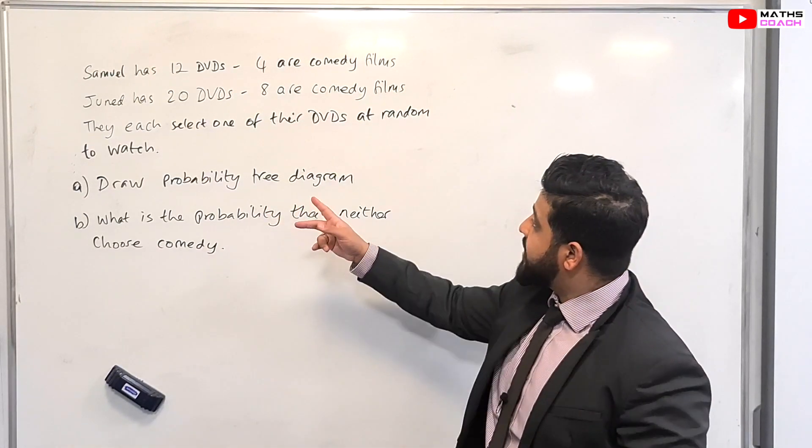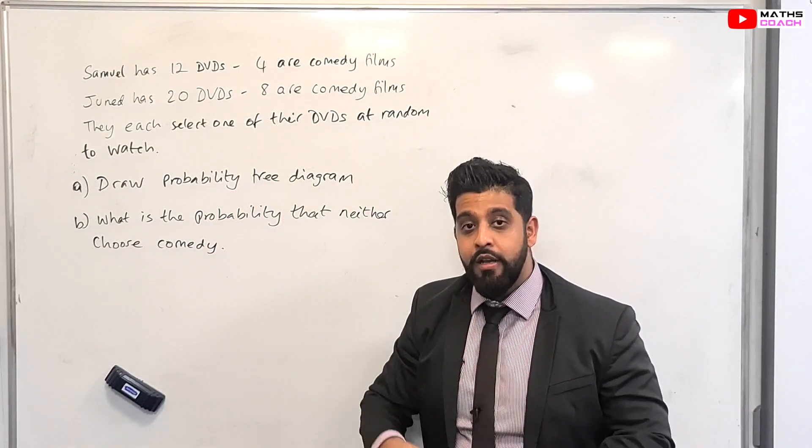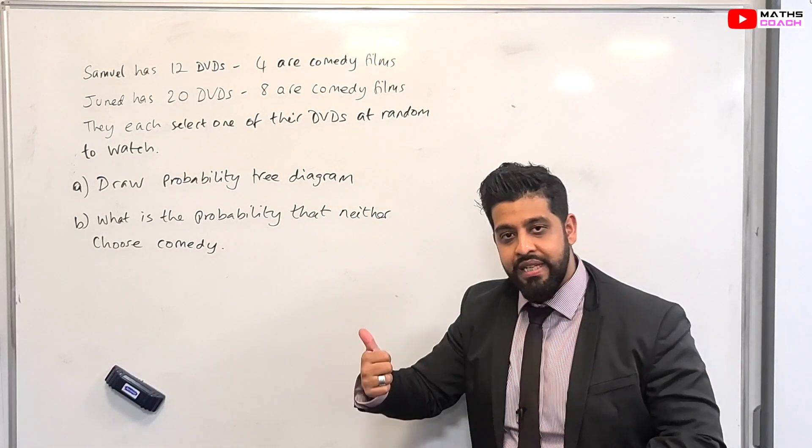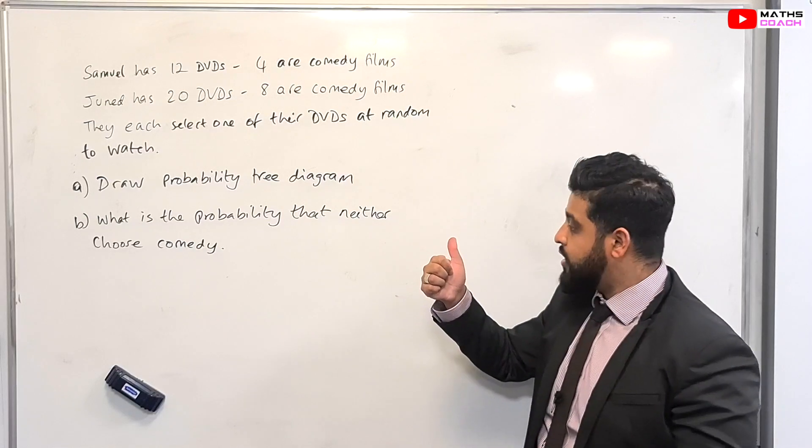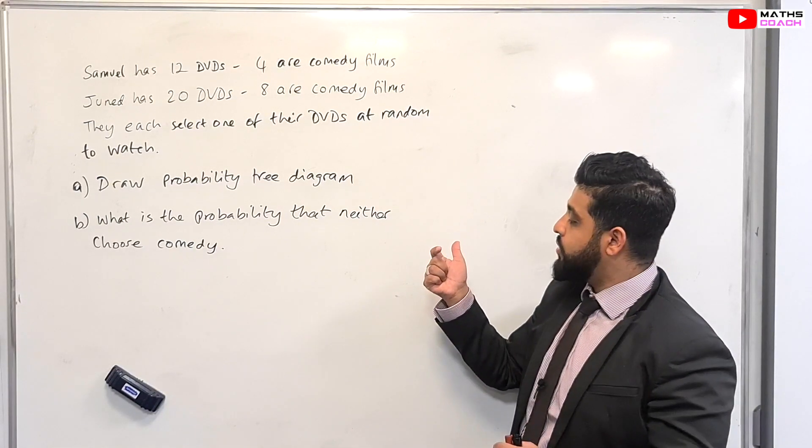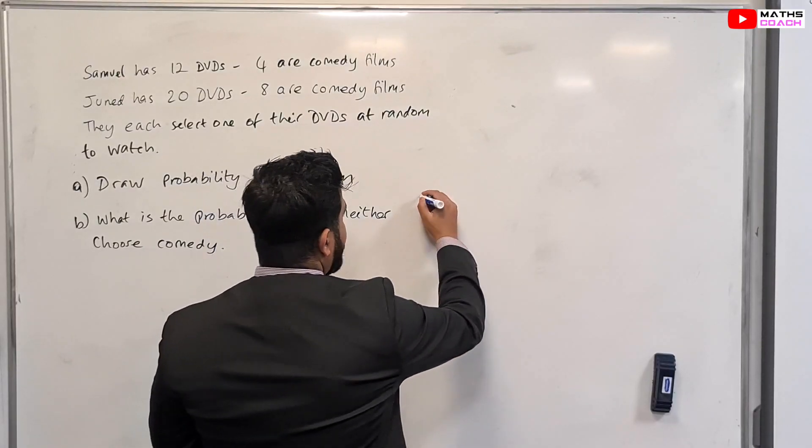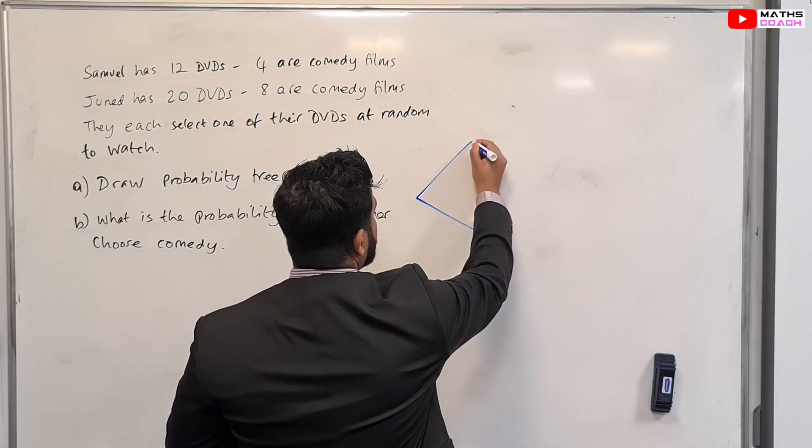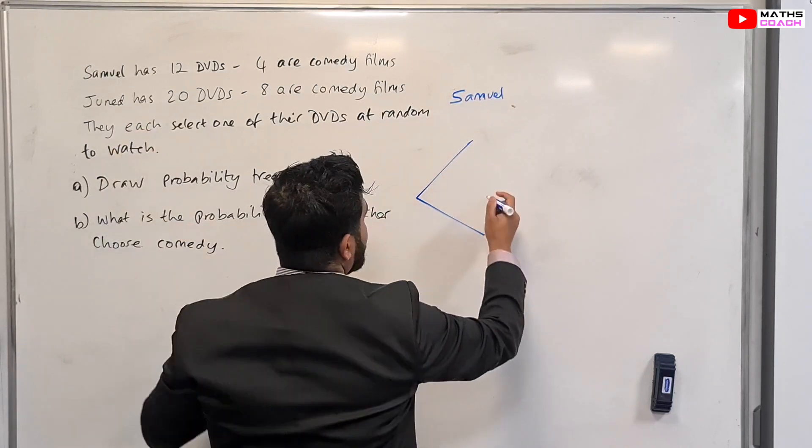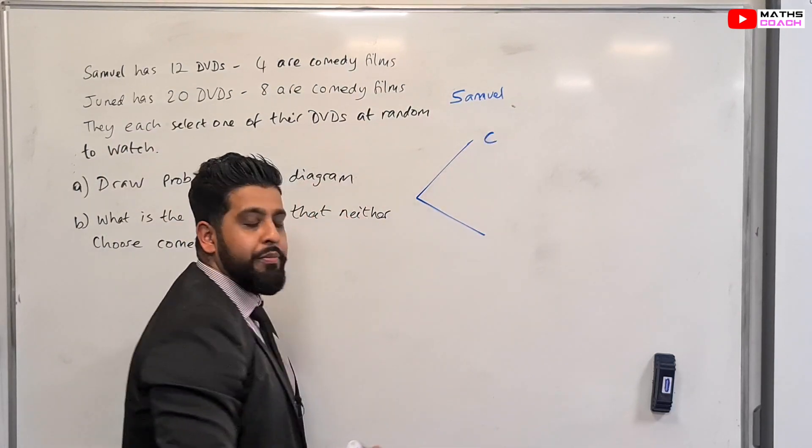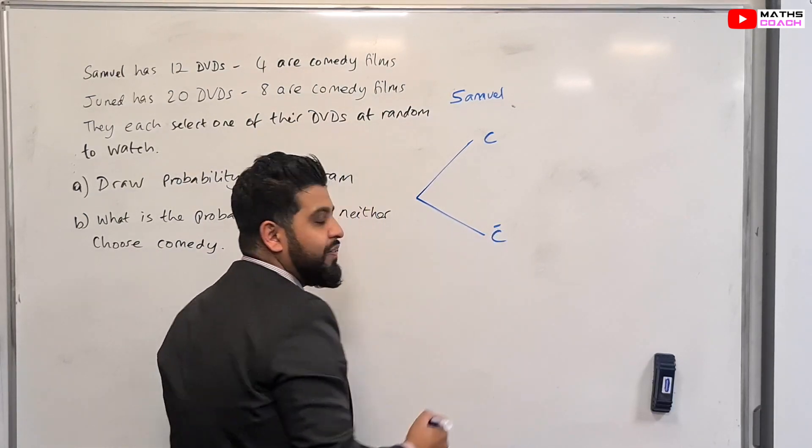So our question says that they each select one of the DVDs at random to watch and draw a probability tree diagram. So we want to draw and represent this in a tree diagram. We want to have a choice for Samuel to choose the DVDs and we want to have a choice for Junaid to pick his DVDs. So let's begin by drawing our probability tree diagram here. So we have here this is going to be Samuel, Samuel's selection here. Now Samuel choosing comedy will represent it with a C and Samuel not choosing comedy will represent it with a C with a dash on top.